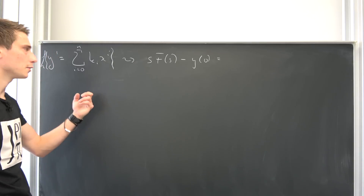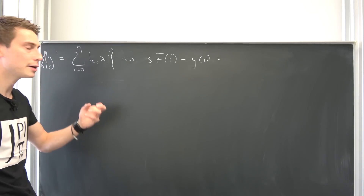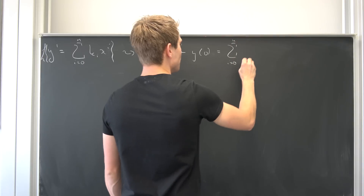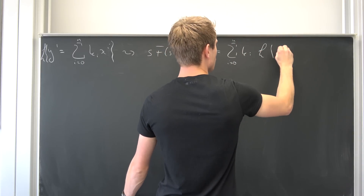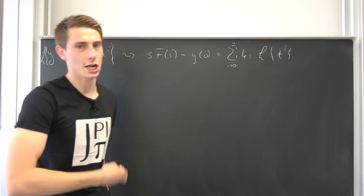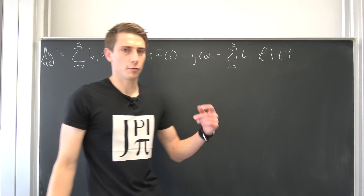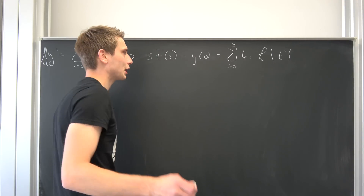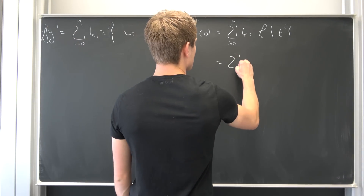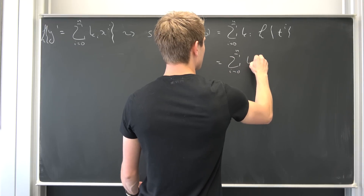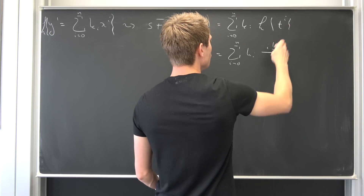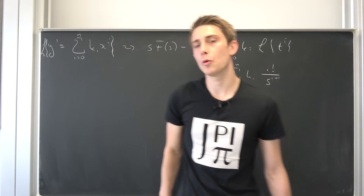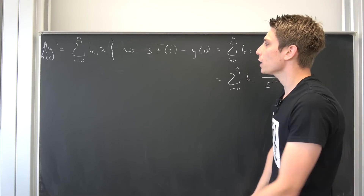On the right-hand side we have the Laplace transform of the polynomial. Since k_i are constants, we can bring them outside, and it's a finite summation so we can use linearity of the Laplace transform. We get the finite sum from i equals 0 to n of k_i times the Laplace transform of t to the i. As derived in my gamma function video, the Laplace transform of t to the i is i factorial over s to the i+1. So we have the sum from i equals 0 to n of k_i times i factorial over s to the i+1.